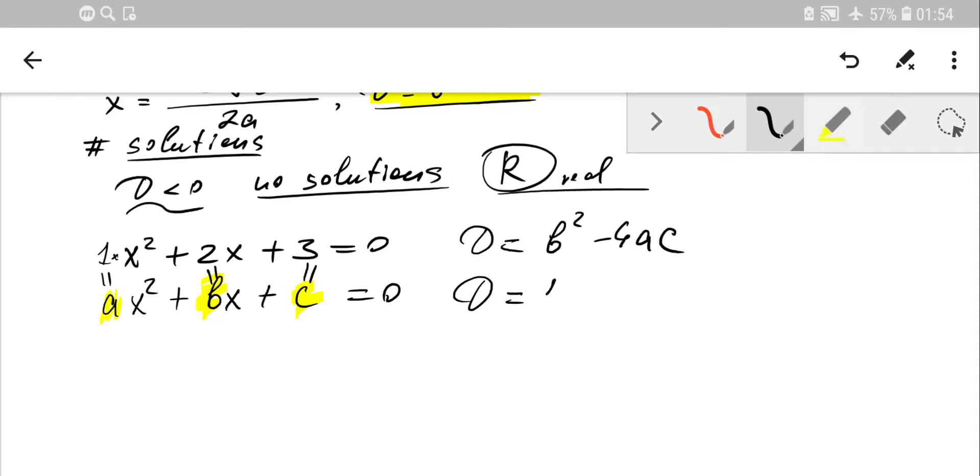All right, so we know all the coefficients and let's calculate discriminant. b squared is 4 minus 4ac, which is 4 times 3 times 1. So we'll get minus 12 in total. So we'll get finally negative a. So discriminant is negative. So the theoretical basis tells you that no real solution.